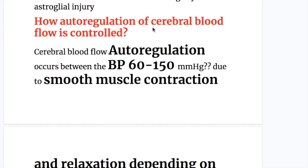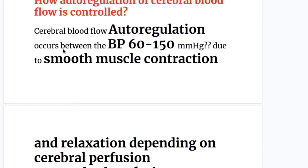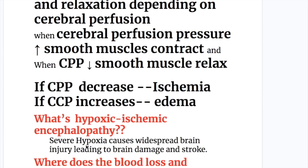Cerebral blood flow autoregulation occurs between blood pressures of 60 to 150 mmHg, due to smooth muscle contraction and relaxation depending on cerebral perfusion pressure. When cerebral perfusion pressure increases, smooth muscle contracts; when it decreases, smooth muscle relaxes. If cerebral perfusion pressure decreases it causes ischemia, and if it increases it causes edema.